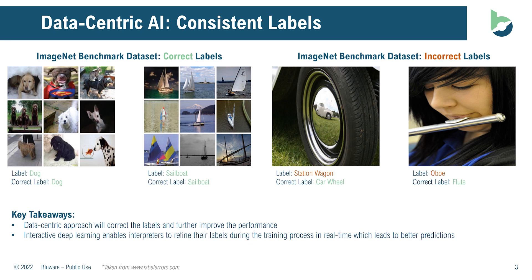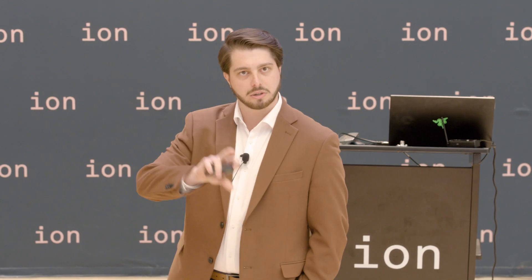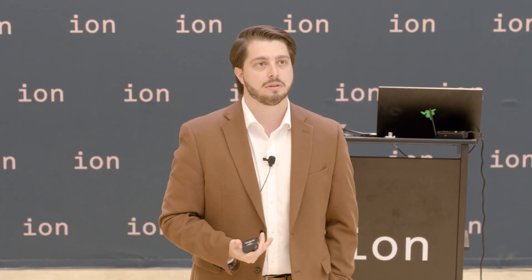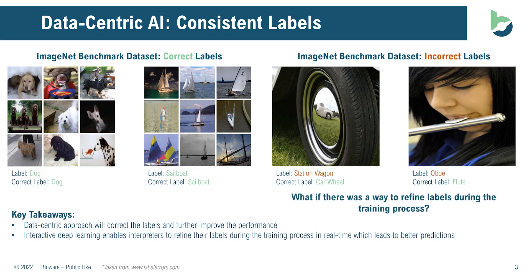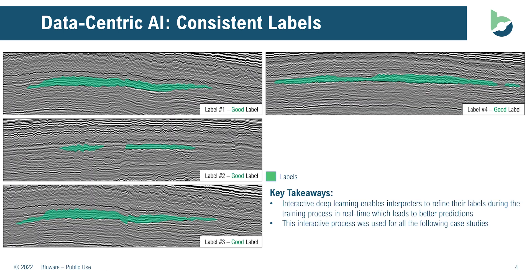You have some inherently incorrect labels. Here we see a label for a station wagon, but actually that's a car wheel. And as a musician — as a drummer — I can definitely tell that that is not an oboe and it should actually be a flute. This is where the problem with model-centric approaches comes in. If you don't focus on the data and just focus on the model, you're going to get poor predictions because of the incorrect labels. With the data-centric approach, what if there was a way to actually correct those faulty labels as you were training?